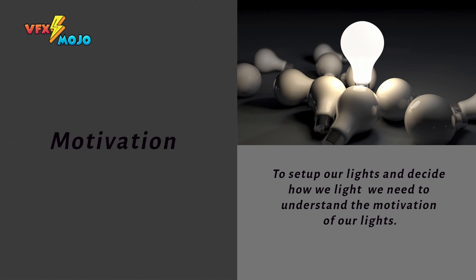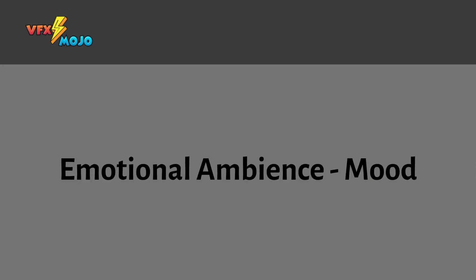A simple example: if you look at this image here, there is only one light source in the scene, so you wouldn't add random lights — the main motivation of the lighting in the scene would be that one source. Knowing the motivation of your lights means the light can tell a story. To give an analogy, you wouldn't animate a character without knowing what the character is trying to do, and you wouldn't create a texture without knowing what type of material you are trying to create. The same holds true for lighting.